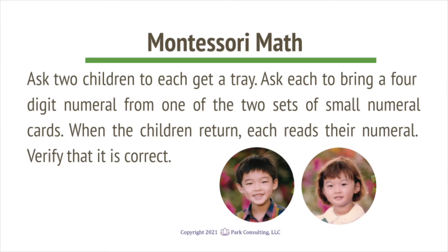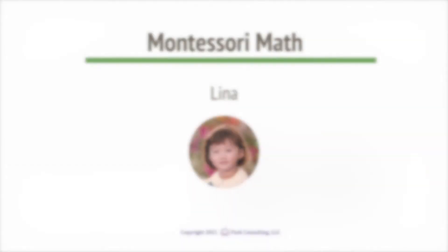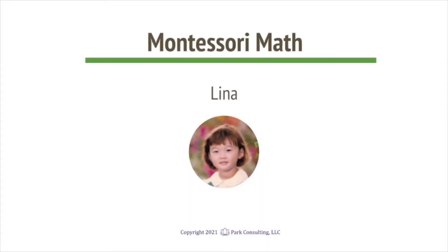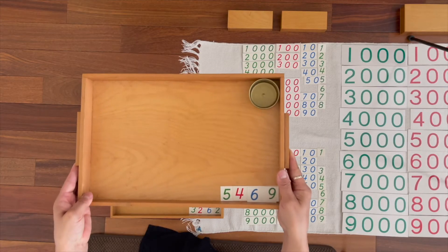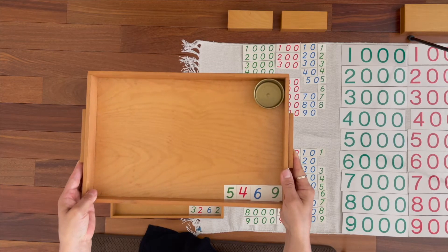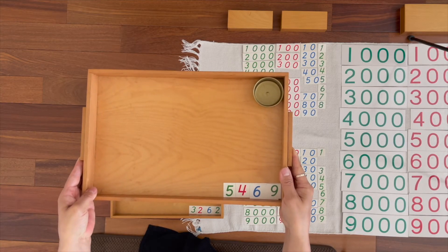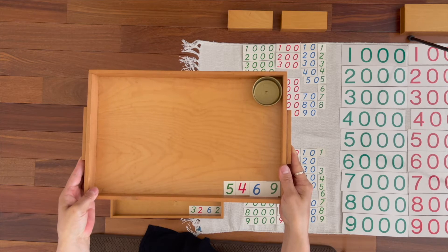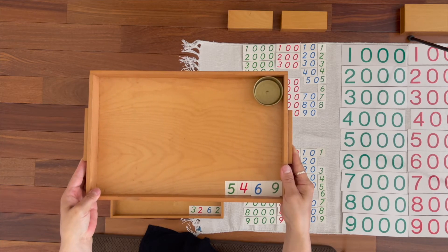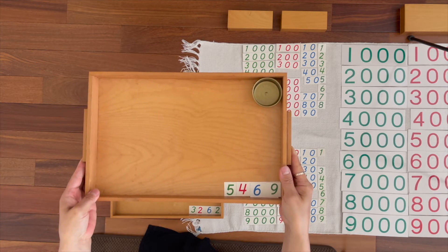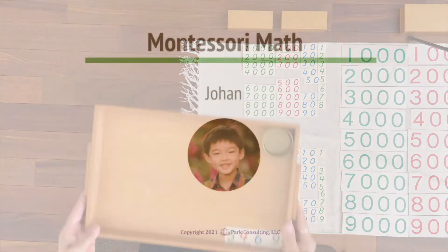This is called Operations with Golden Beads. Lena, you brought 5 hundreds, 6 tens, 9 units. Now, can you get the quantities that match those numerals?